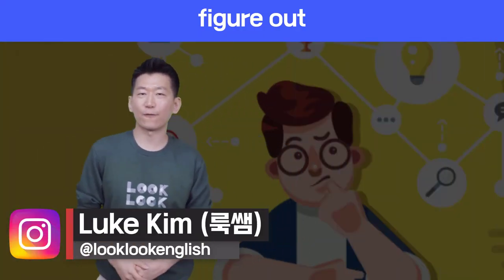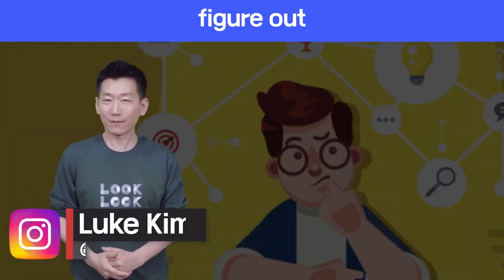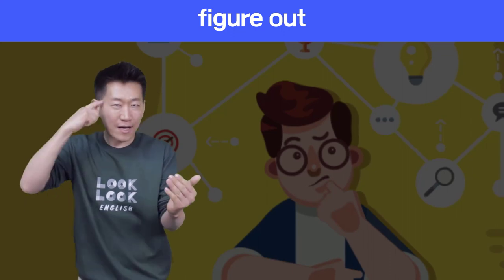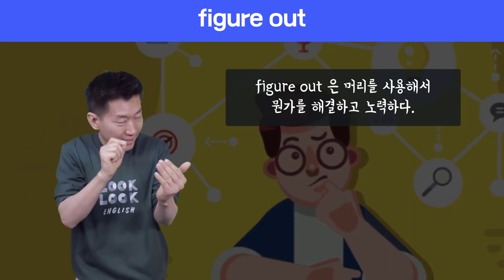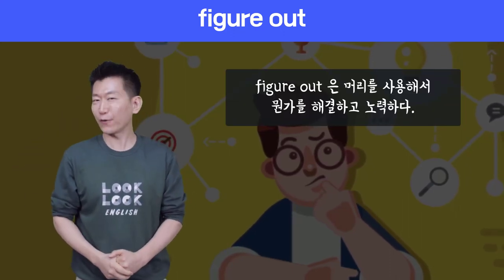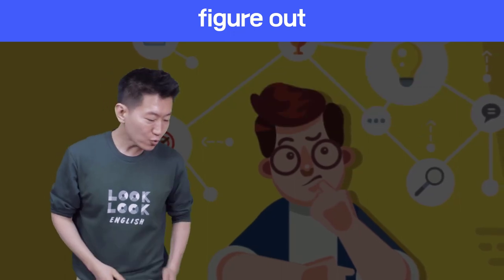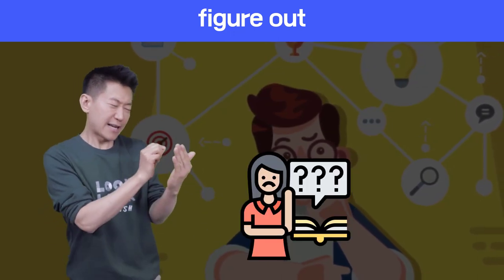오늘의 표현 figure out입니다. Figure out이라는 것은 어떤 의미냐 하면 어떤 것을 머리를 사용해서 어떤 것을 해결하려고 노력하는 겁니다. 그때 figure out이라는 것을 사용할 수 있죠. 어떤 수학 문제가 있습니다. 수학 문제를 내가 I'm trying to figure it out.